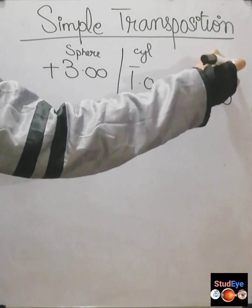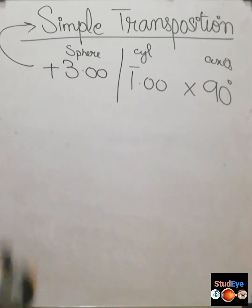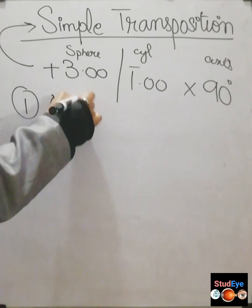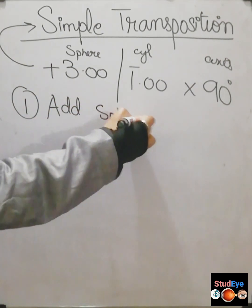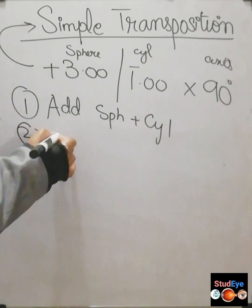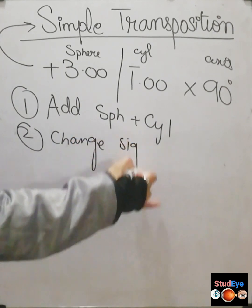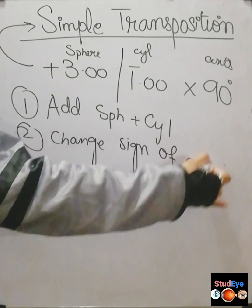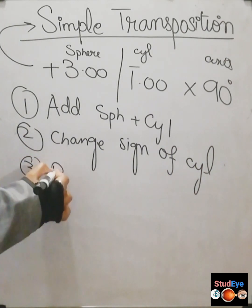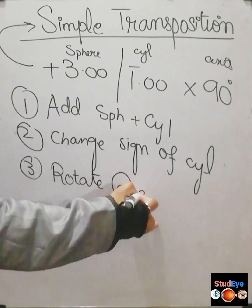To perform simple transposition, there are three steps. In the first step, you add the sphere to the cylinder — here that is plus 3 diopters. In the second step, you change the sign of the cylinder: if it is plus, change it to minus; if it is minus, change it to plus.